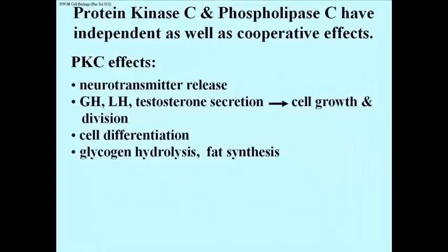Protein kinase C and phospholipase C mediate some common response pathways but also have some independent effects. Specific examples of protein kinase C effects include the release of neurotransmitters from nerve cells, cellular differentiation, participation in glycogen breakdown and fat synthesis in different tissues, as well as the secretion of hormones from endocrine glands — such as growth hormone and LH (luteinizing hormone) from the pituitary gland and testosterone from the testes. These hormones are mitogenic — that is, they stimulate cell division in their own target tissues.